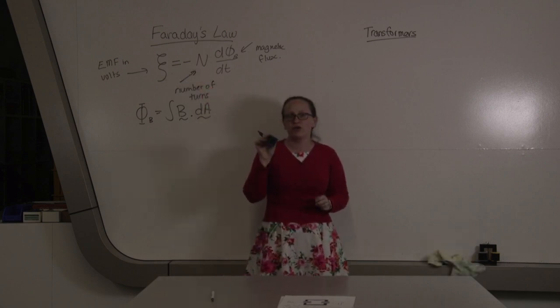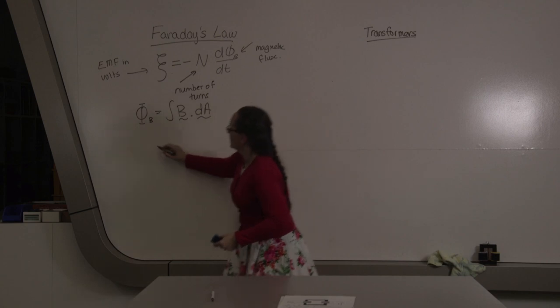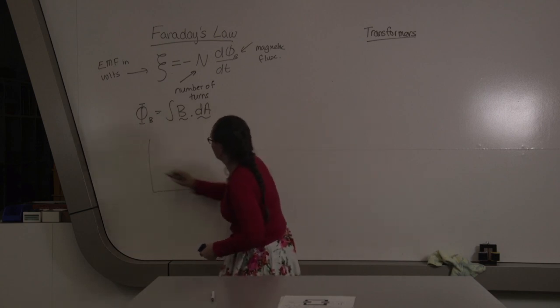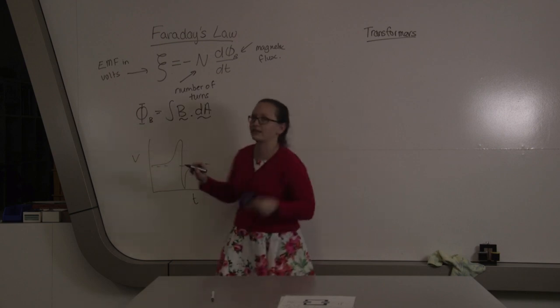In the lab, you're going to be dropping magnets through a coil of wire, and your coil of wire will be connected to a voltage probe. So what you will get is a voltage time graph. Your graph will look something like this.